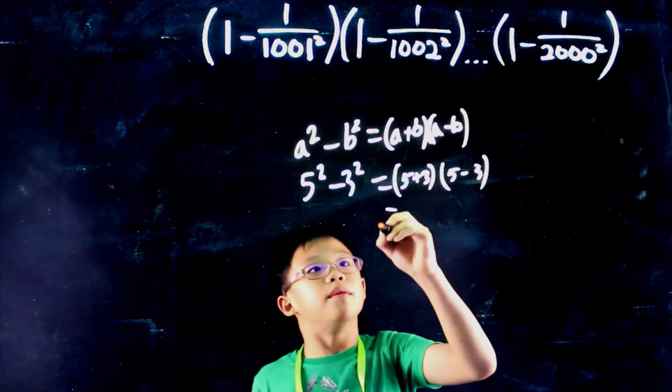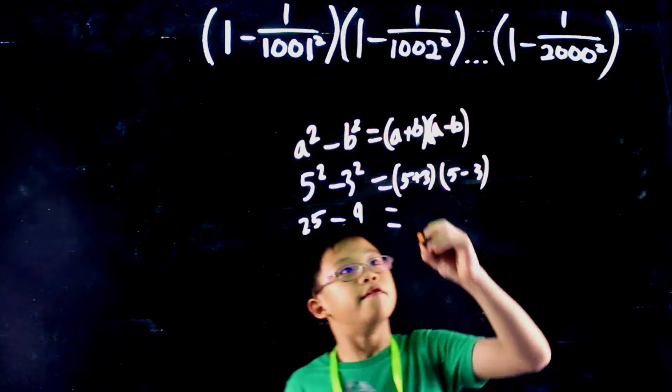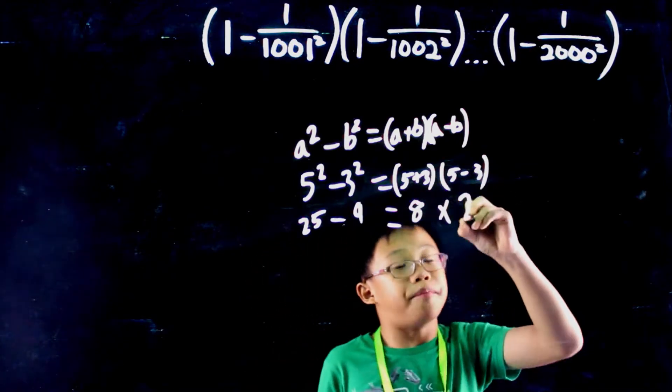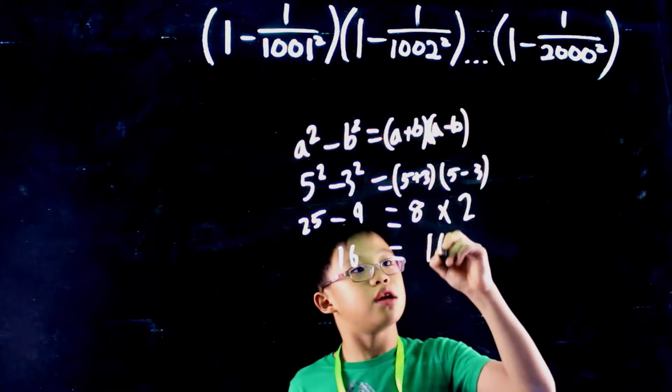Let's do the workings on both sides. 5 squared is 25 minus 3 squared which is 9. 5 plus 3 is 8 and we multiply by 5 minus 3 which is 2. And if we do it one more time, we should get 16 on this side and 16 on this side.